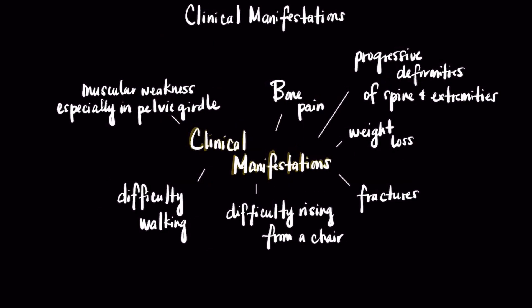This chart depicts the clinical manifestations related to osteomalacia. These clinical manifestations all tie into bone demineralization as discussed earlier. In osteomalacia, you would see bone pain, weight loss as a result of decreased bone density, fractures as a result of demineralization, deformities in the spine or extremities, or any form of weakness — for example, difficulties in walking or rising from a chair.